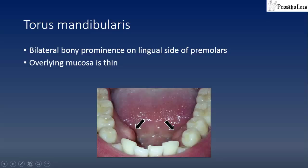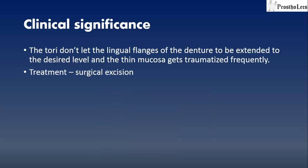Torus mandibularis consists of bilateral bony prominences on the lingual side of premolars. The overlying mucosa is quite thin. The clinical significance is that the tori do not allow the lingual flanges of the denture to be extended to the desired level, and the thin mucosa gets traumatized very frequently. The only treatment is surgical removal so that you can extend the flanges of the denture properly.